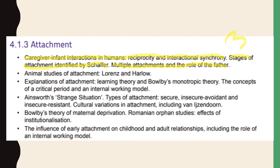The second bullet point covers animal studies of attachment — Lorenz and Harlow. There could be a 16 marker on animal studies of attachment as a whole, using both Lorenz and Harlow. In theory there could be separate 16 markers on each, but it's more likely that Lorenz and Harlow would appear as eight markers. So realistically for that second bullet point you're probably looking at one, maybe three if you're unlucky. Next bullet point: we've got explanations of attachment — learning theory and Bowlby's monotropic theory. So we've got two theories hiding in there, making two potential 16 markers, one for each. There's also likely to be a question on explanations plural of attachment where you have to do both. The concepts of a critical period and internal working model are more likely to appear as smaller knowledge-based questions, as they're embedded within Bowlby's theory.